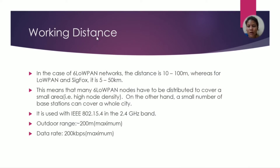In the case of a 6LoWPAN network, the working distance is 10 to 100 meters. Whereas for LowPAN and 6LoWPAN forks, it is 5 to 50 kilometers. This means that many 6LoWPAN nodes have to be distributed to cover a small area. On the other hand, a small number of base stations can cover an old city. It is used with IEEE.